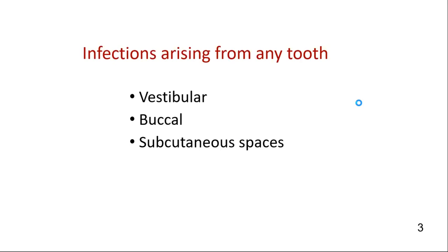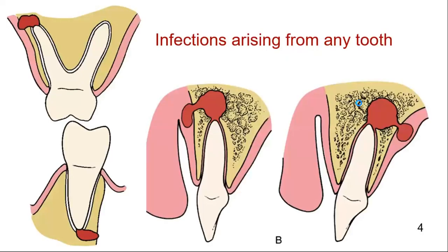The spaces most commonly affected by odontogenic infections, and therefore the most common space involvement seen on clinical examination by the dentist or dental specialist, are the vestibular, buccal, and subcutaneous spaces. Infections of the maxillary and mandibular teeth almost always begin as a vestibular space abscess, based upon the spread via the path of least resistance through the buccal or lingual plates of the bone.